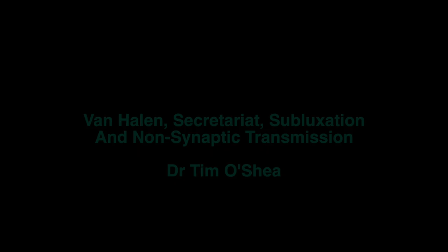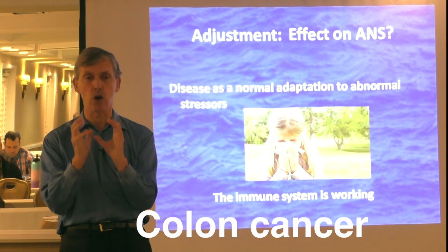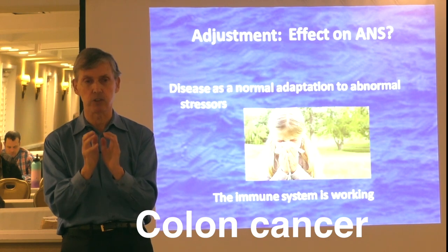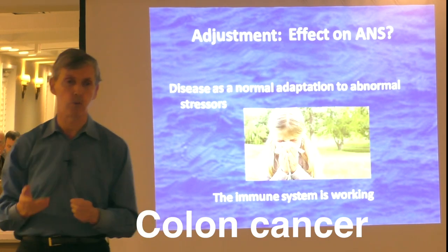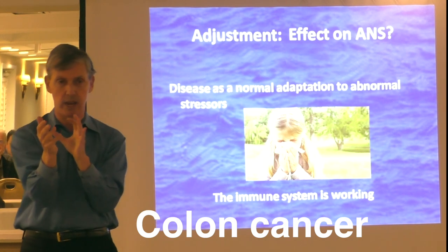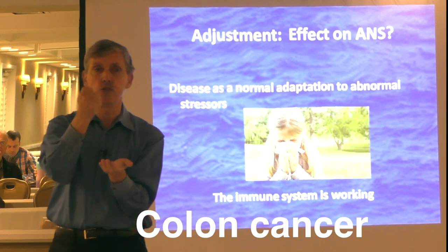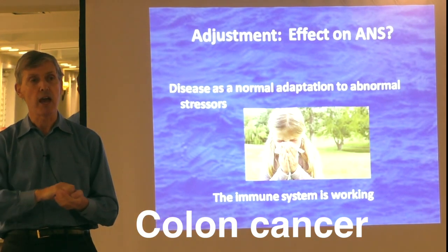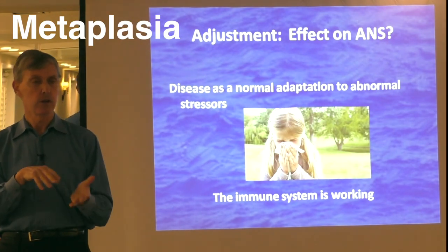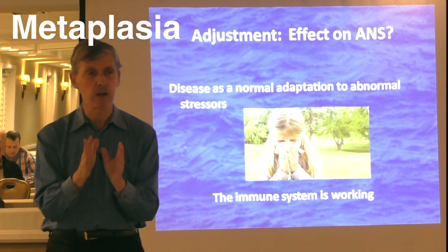We were talking about the etiology of colon cancer. The epithelium of the colon swims in its own waste year after year. Those cells can't expel their own waste because they're swimming in waste. So eventually, they do a normal adaptation to an abnormal stressor and we have metaplasia — the cells become abnormal.